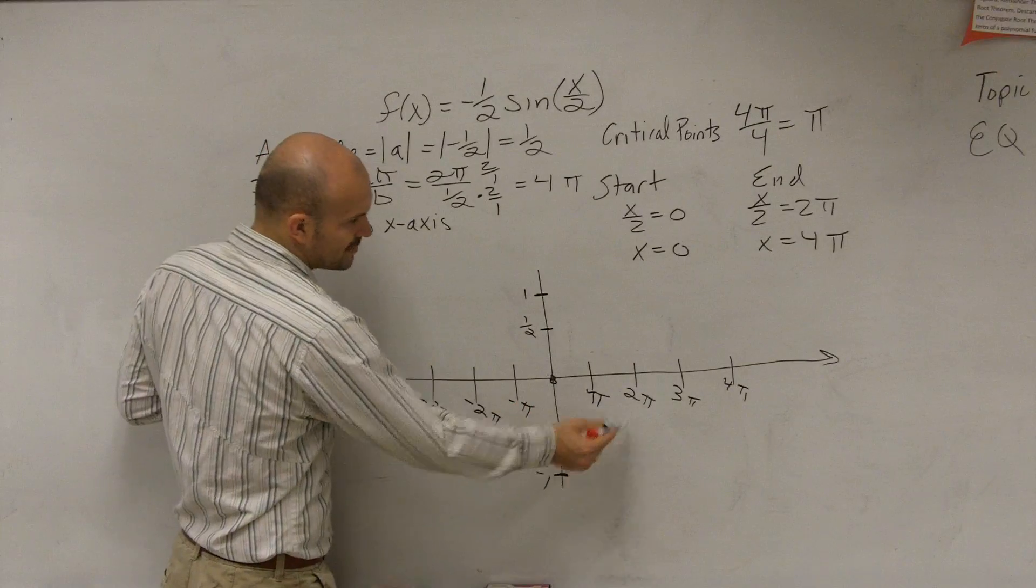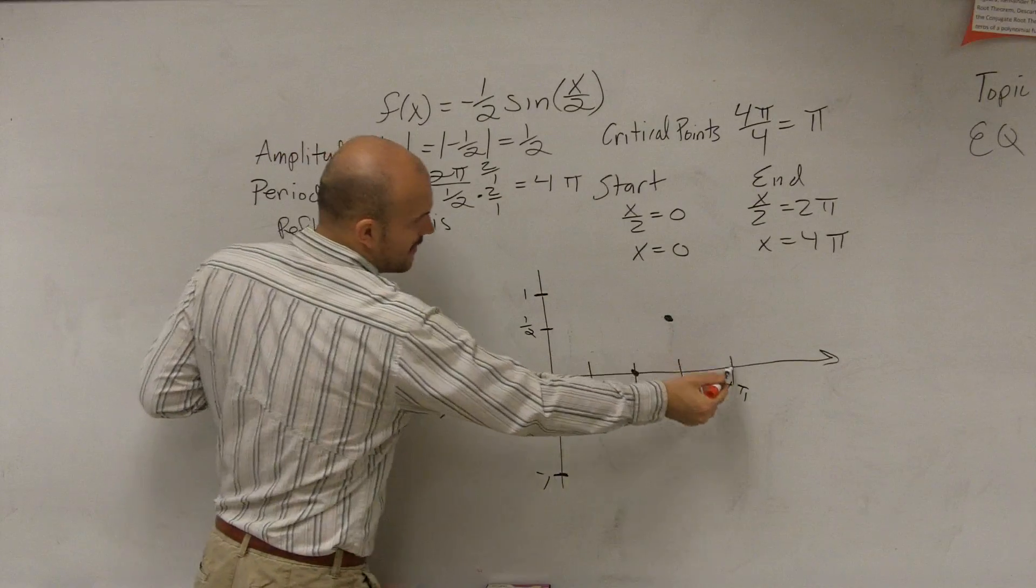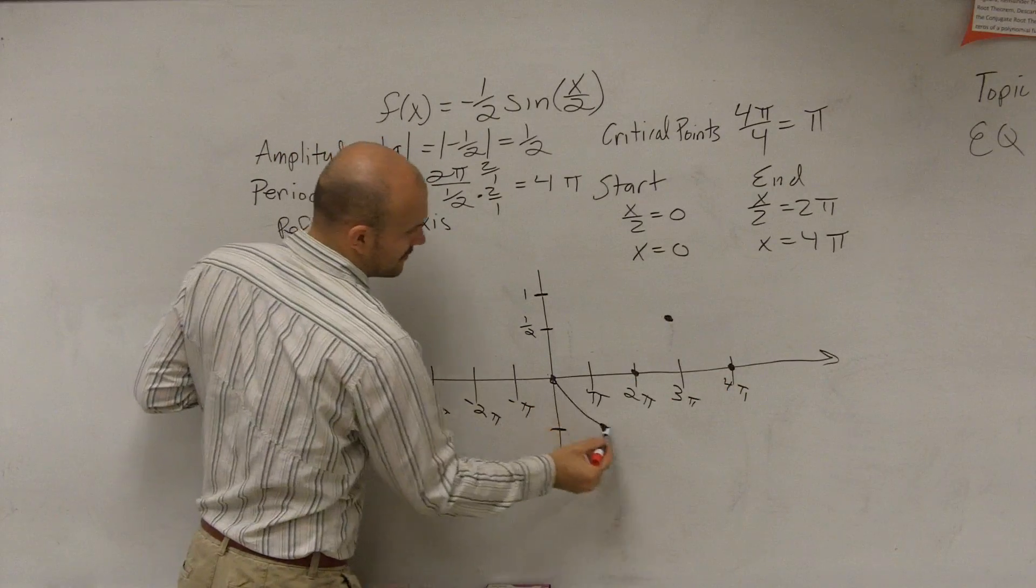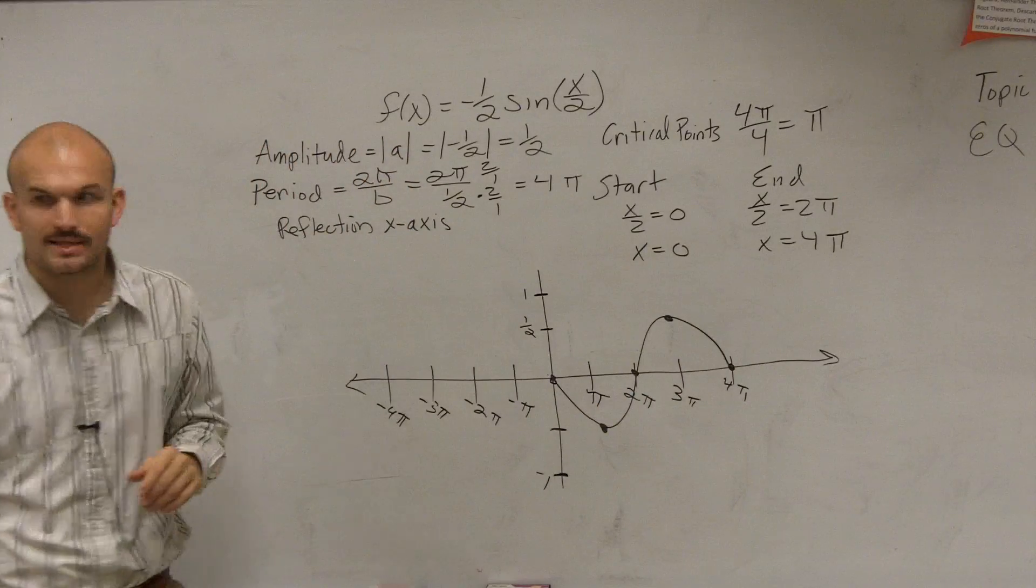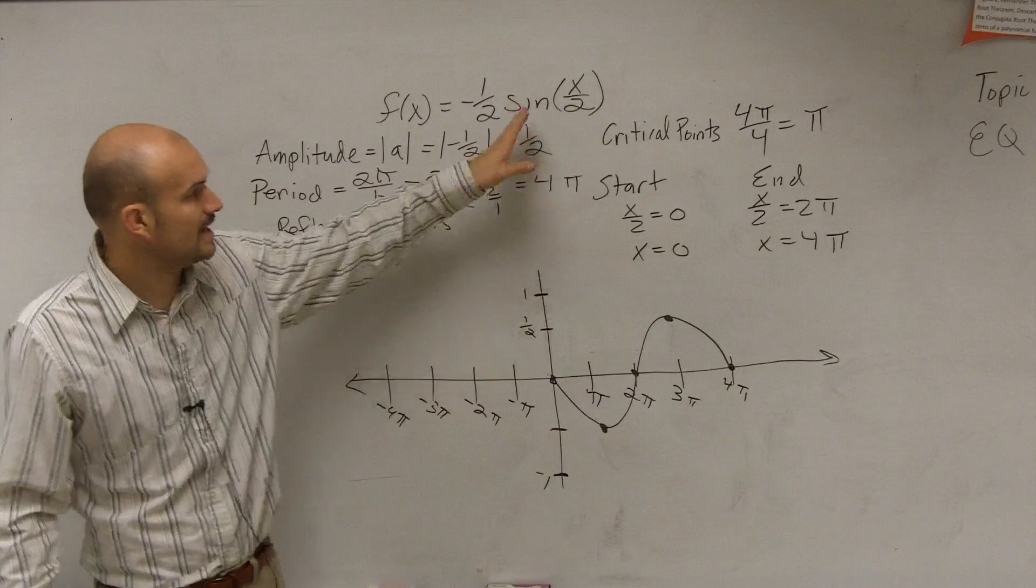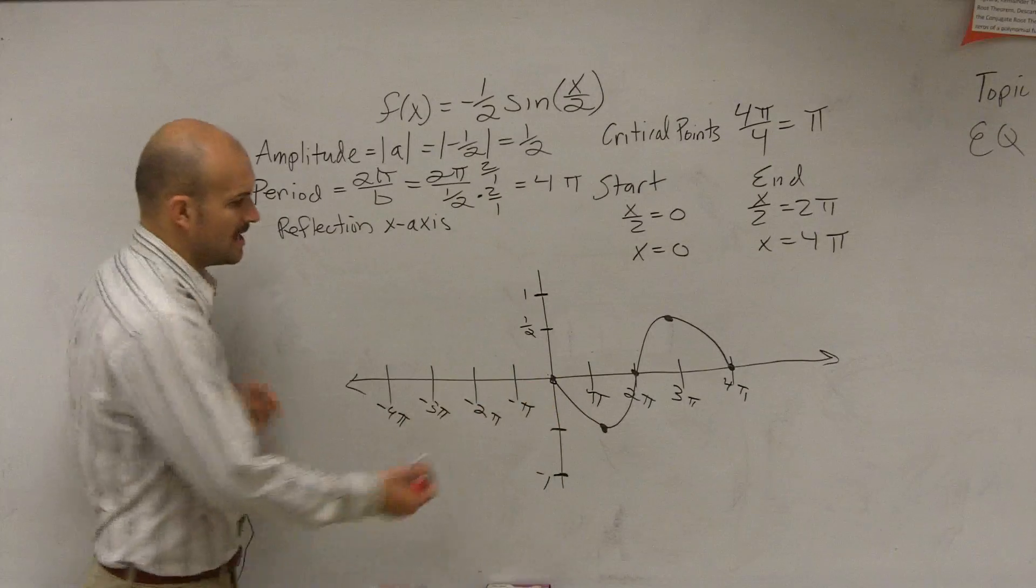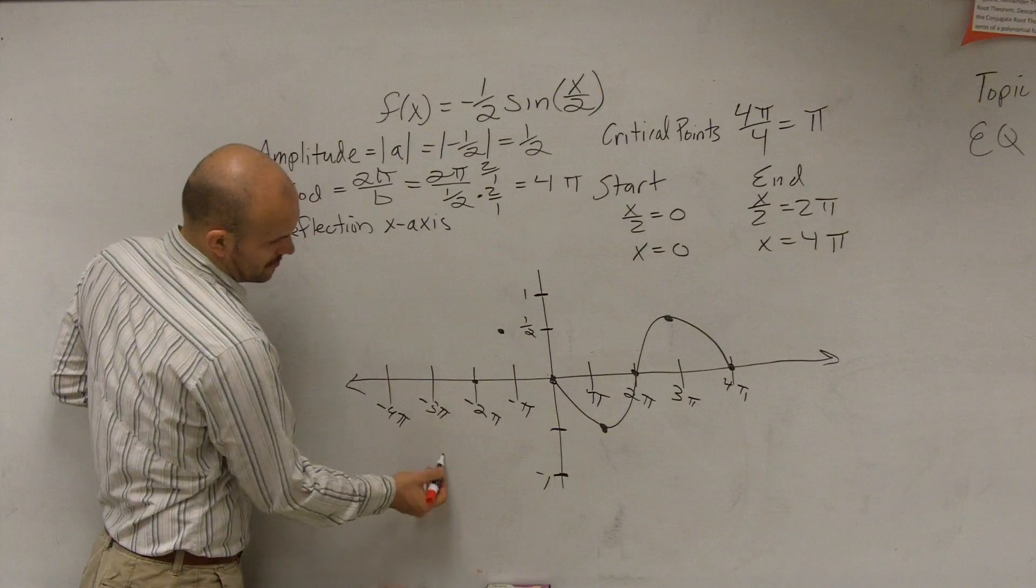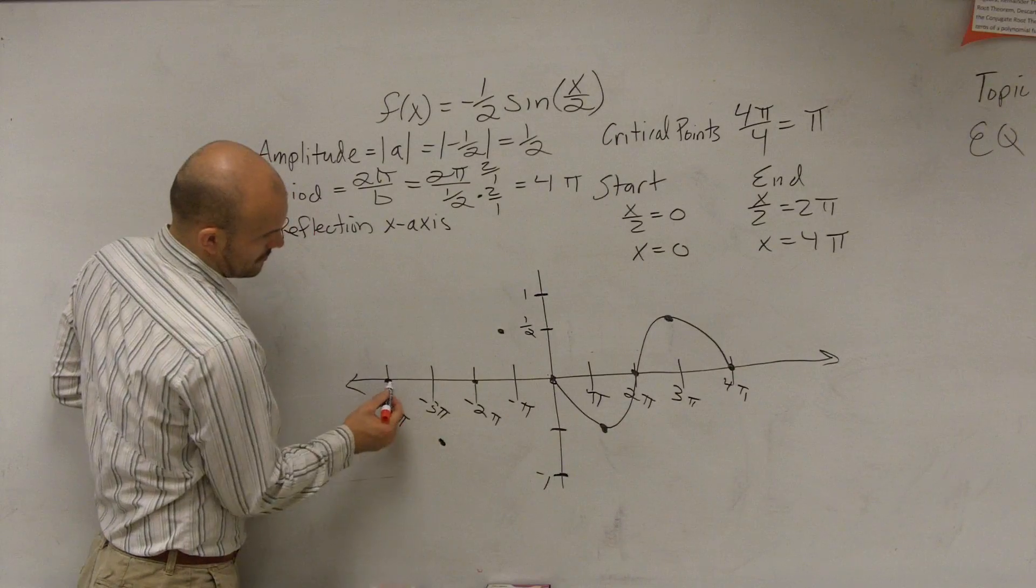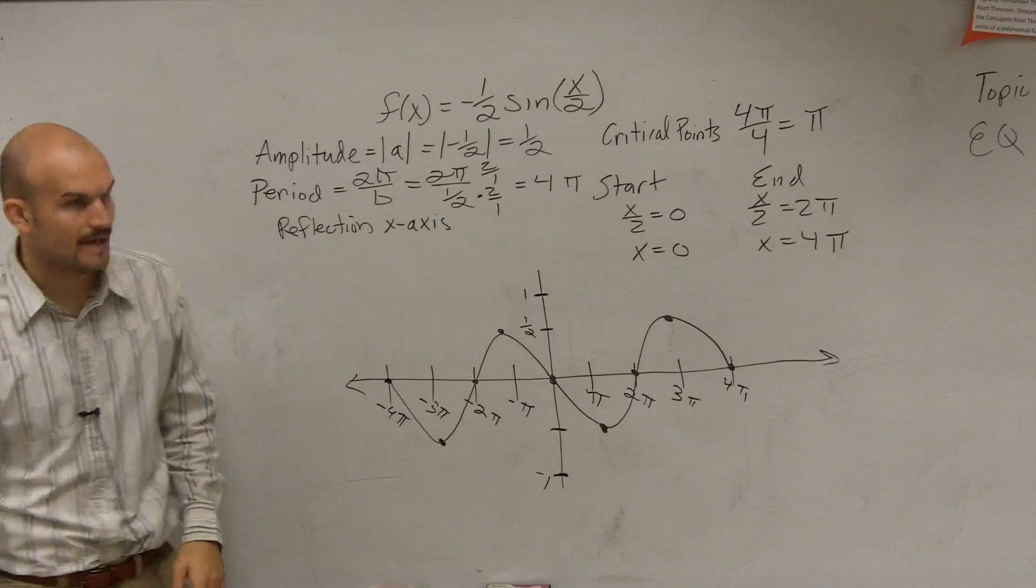Then, the next critical point is the x-axis. Next critical point will be the max, and then x-axis. So the first period that I can graph of my function, negative one half sine of x over two, is going to look like this. Then, I just continue that form of the graph. It's going to look something like that.